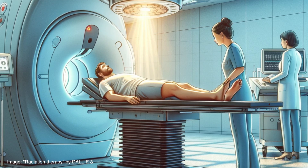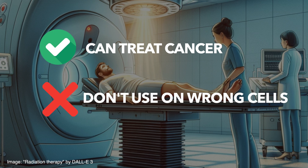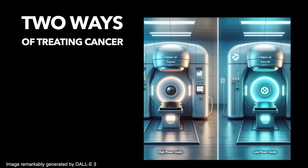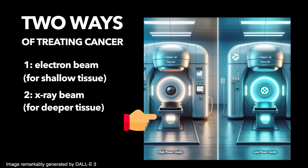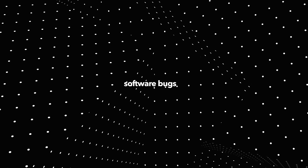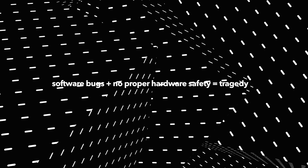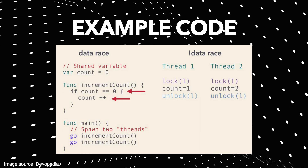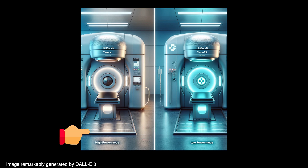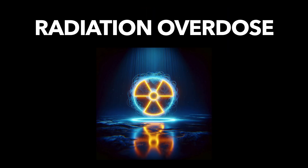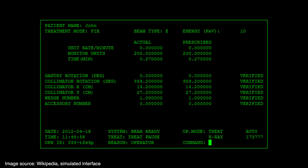Radiation is toxic to living cells in large doses, which makes it useful for killing cancer cells — but it should never reach healthy cells. The Therac-25 offered two treatment modes: a low-energy electron beam for shallow tissues like skin cancer, and a higher-energy X-ray beam for deeper tissues such as lung cancer. The machine had a concurrency bug resulting in a race condition: if a technician first selected X-ray mode and then quickly switched to electron mode, the machine would fire a high-energy beam instead of a low-energy one, delivering a massive radiation dose to the patient.